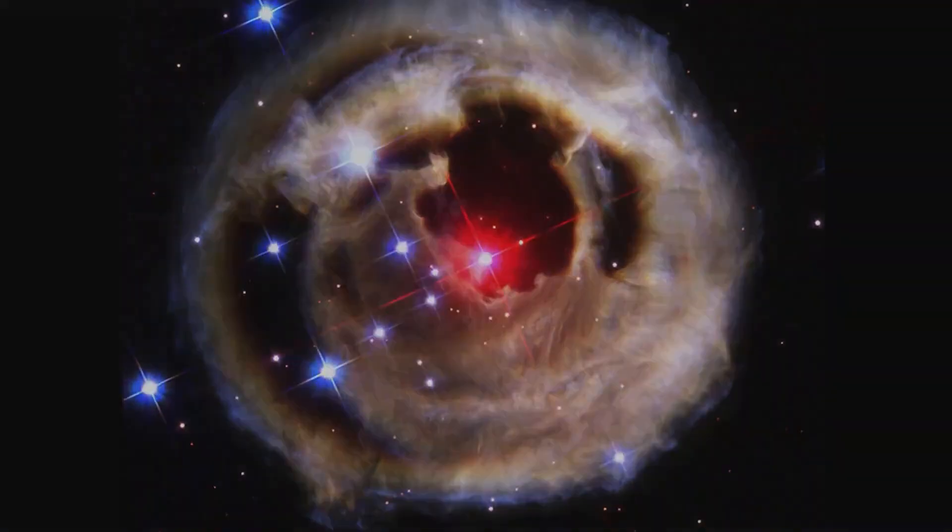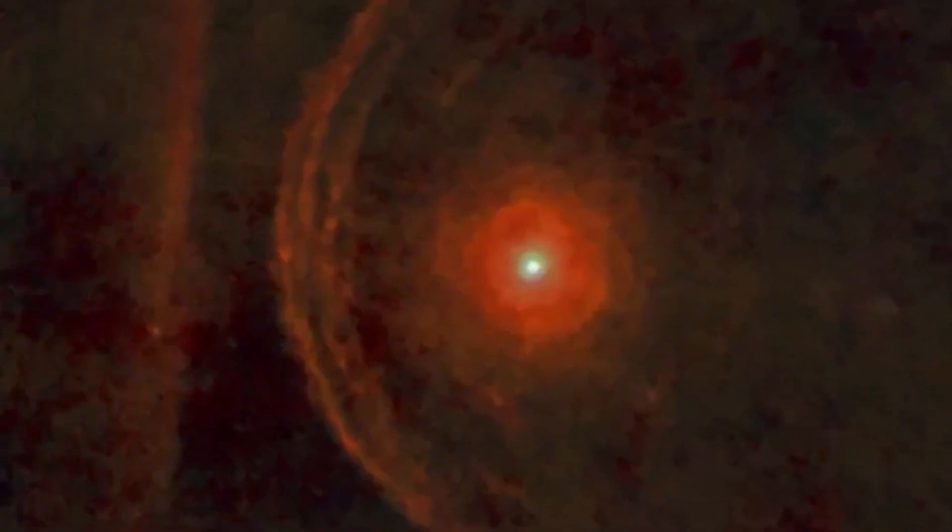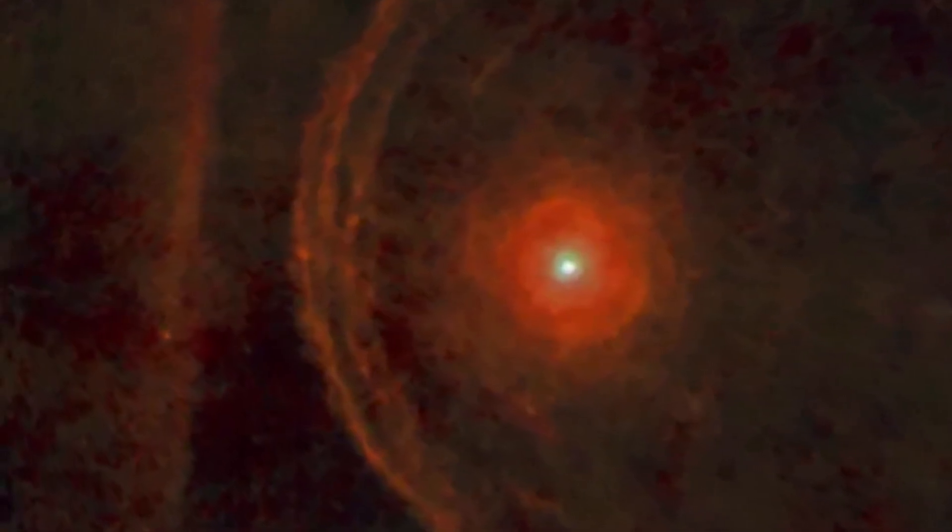Dust clouds, they theorized, or perhaps massive ejections of material from the star's surface. But the dimming passed, and Betelgeuse brightened again, leaving us with more questions than answers.